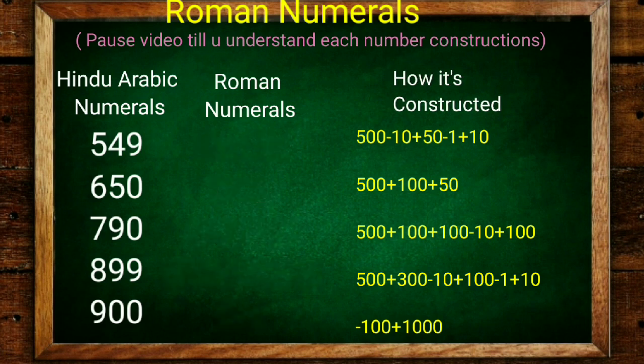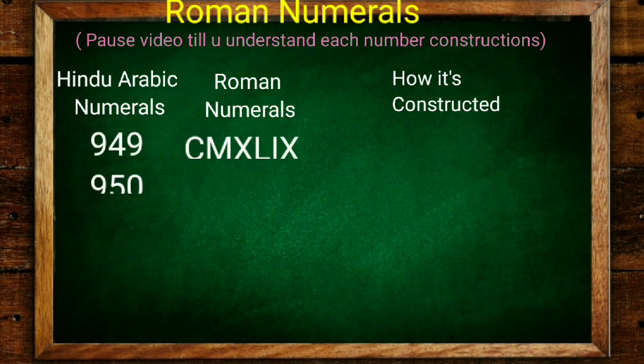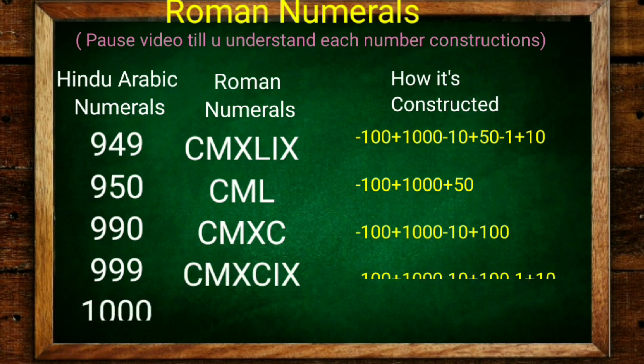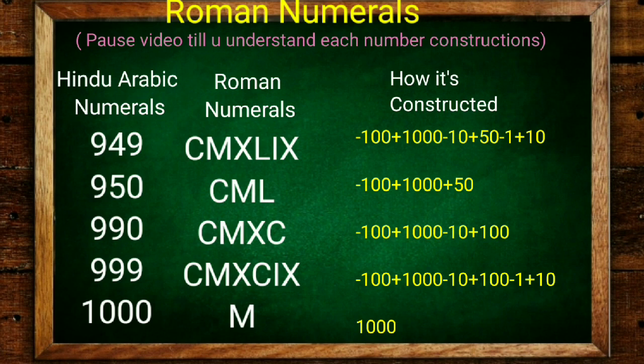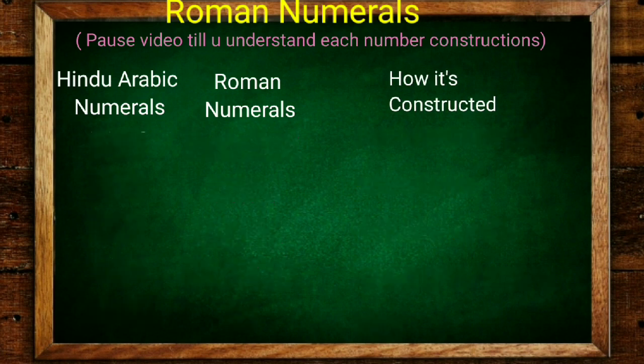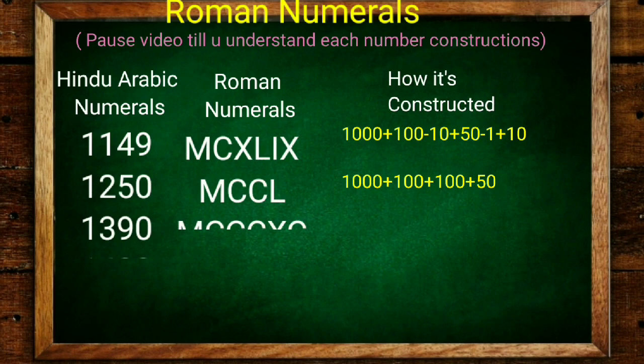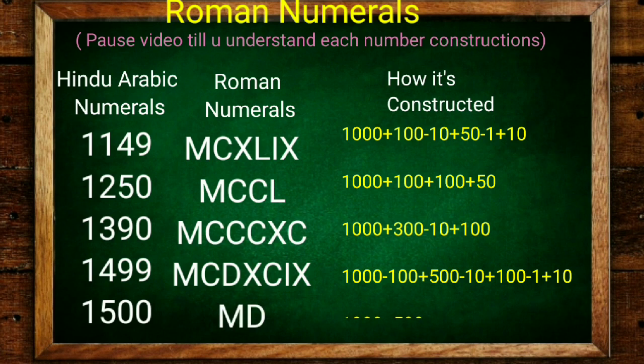949 is 940 plus 9. 950, 990, 999 is 990 plus 9. Now new numeral M is 1000. Now go beyond 1000. 1149, 1250, 1390, 1499. 1500 is M plus D, which is 1000 plus 500.